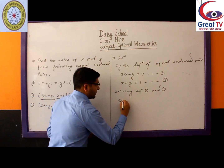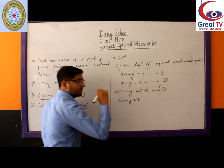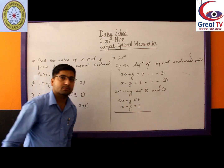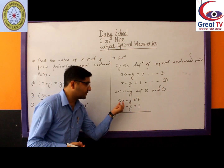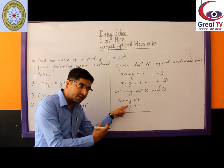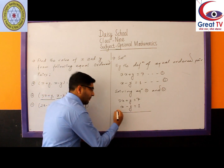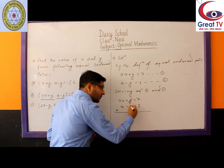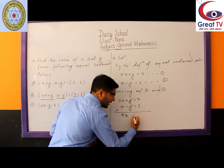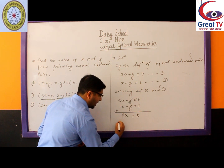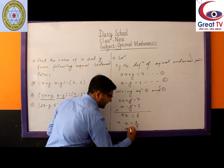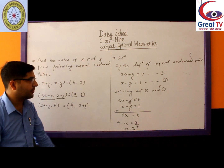Equation 1 is 3X + Y = 7, and Equation 2 is X − Y = 1. Y is positive in the first equation and negative in the second. Adding both equations, the Y terms cancel: 3X + X = 4X, and 7 + 1 = 8. So 4X = 8, which gives X = 8 ÷ 4 = 2. We get the value of X as 2.